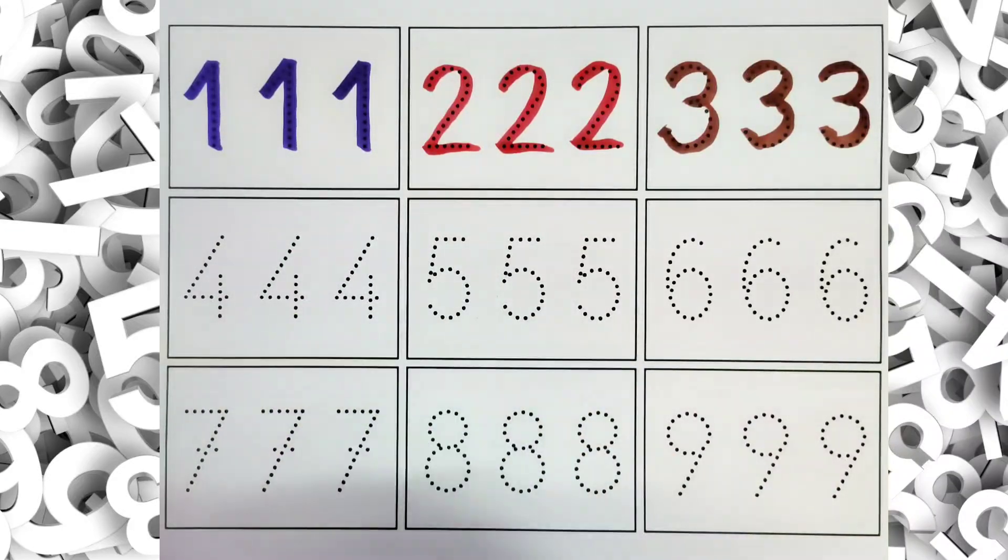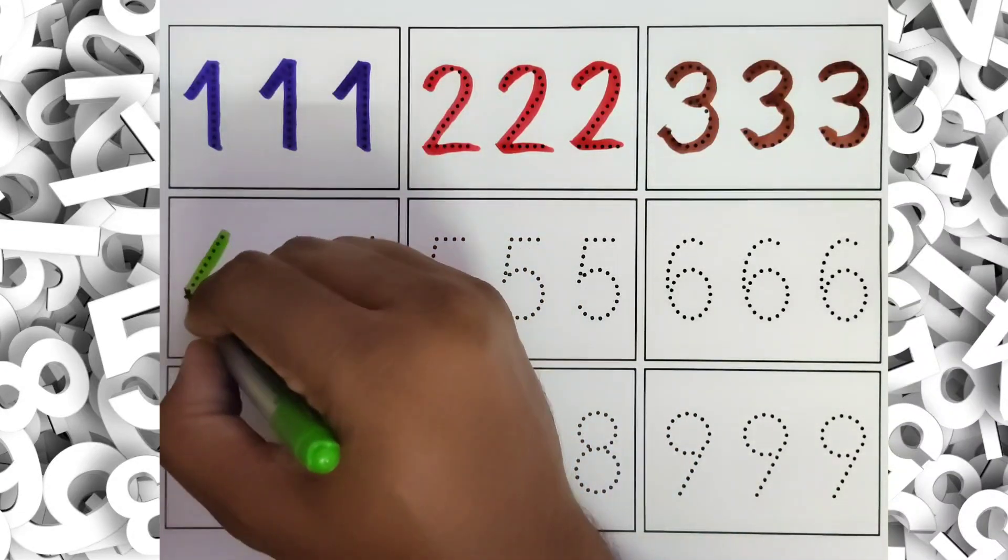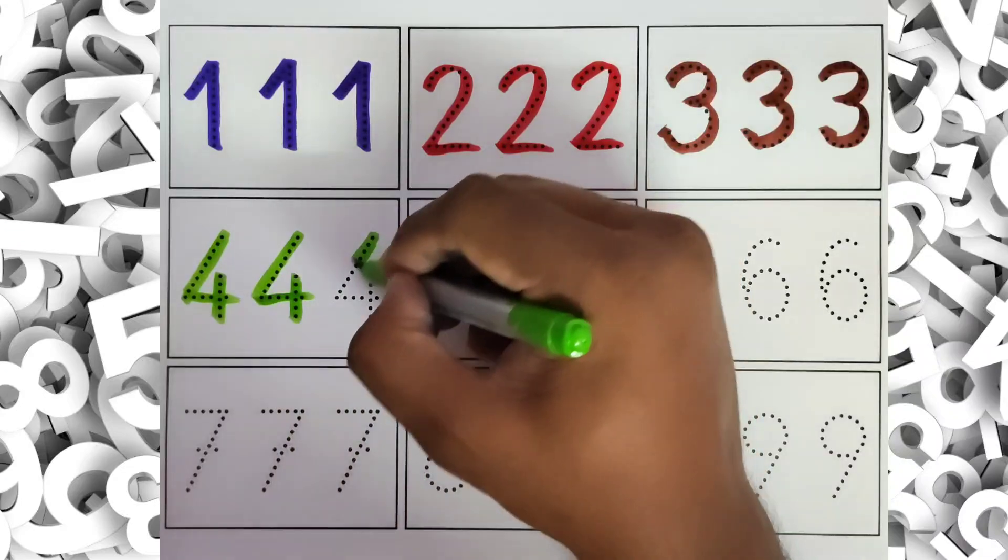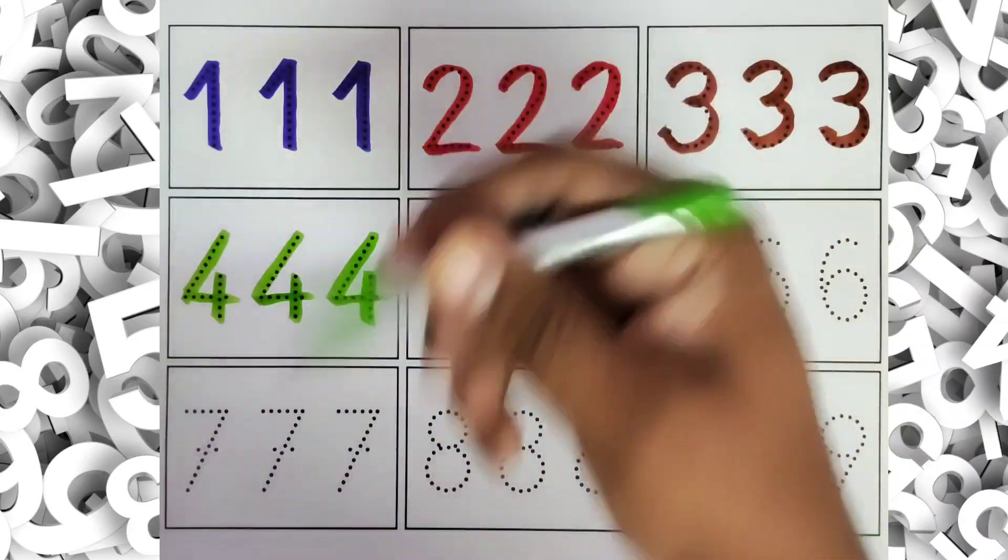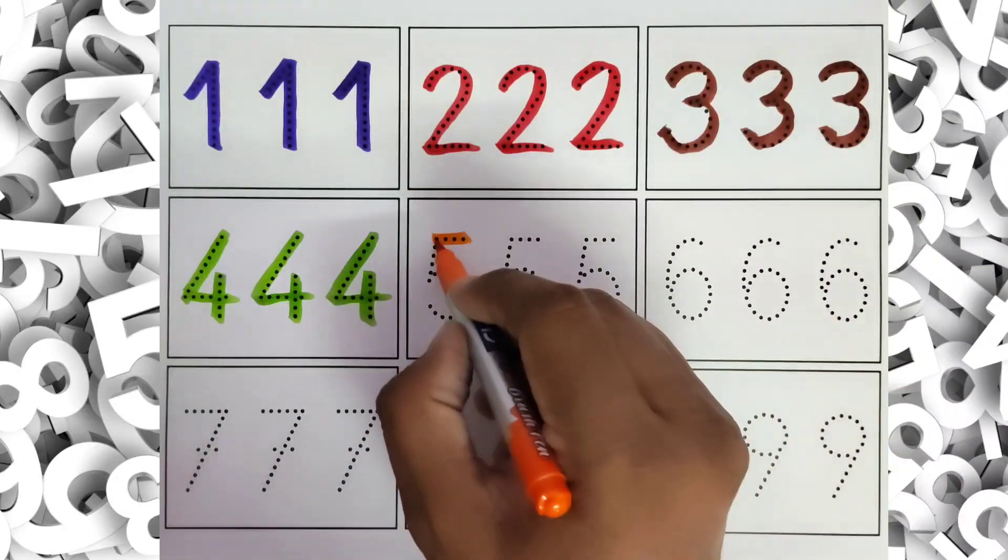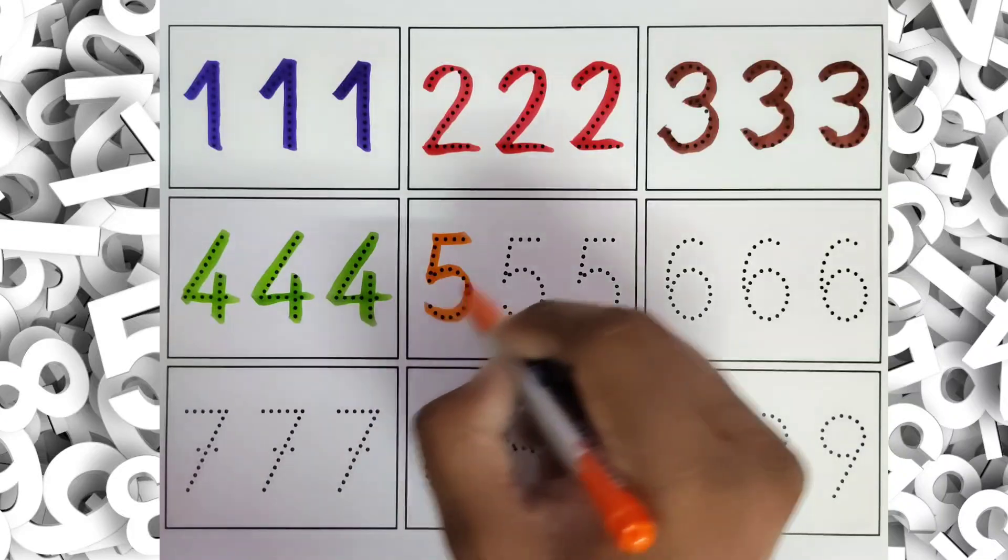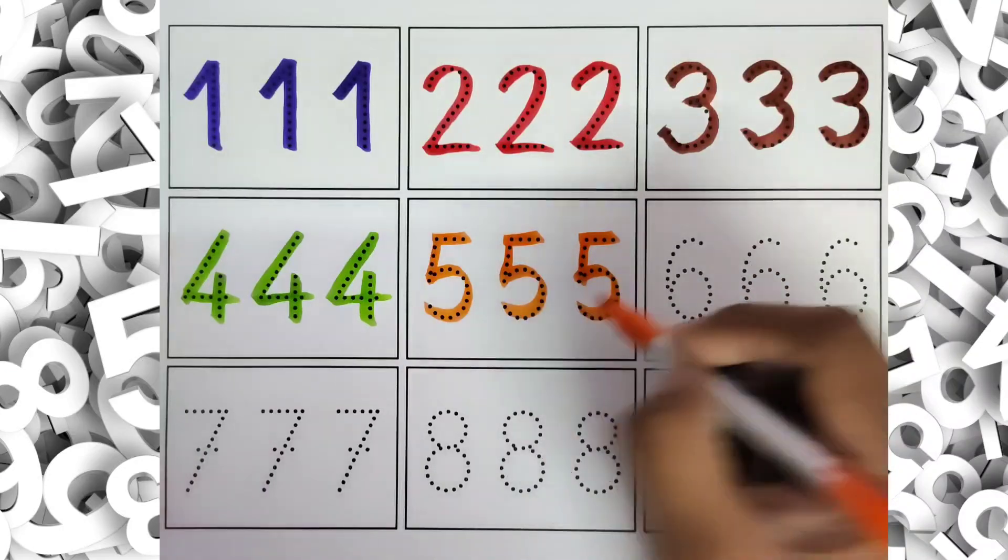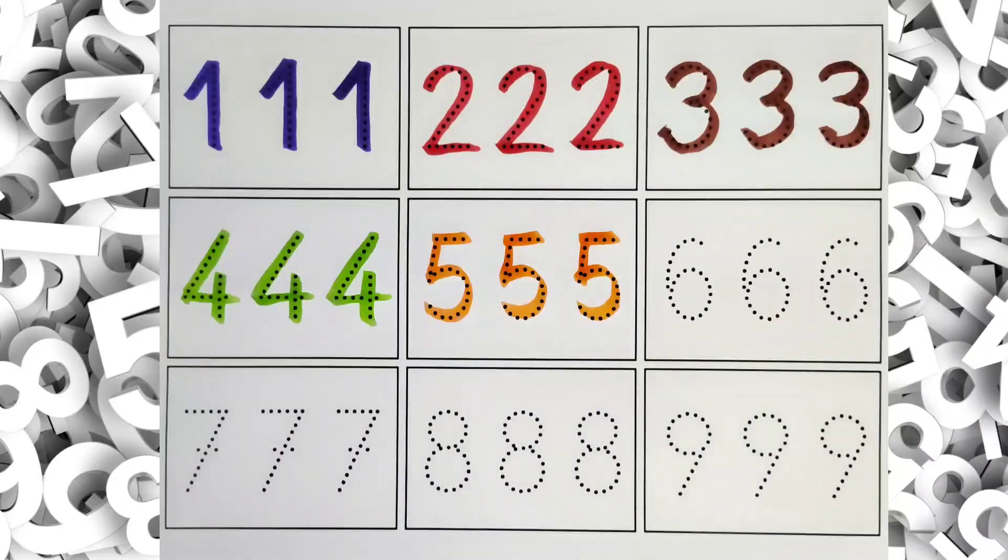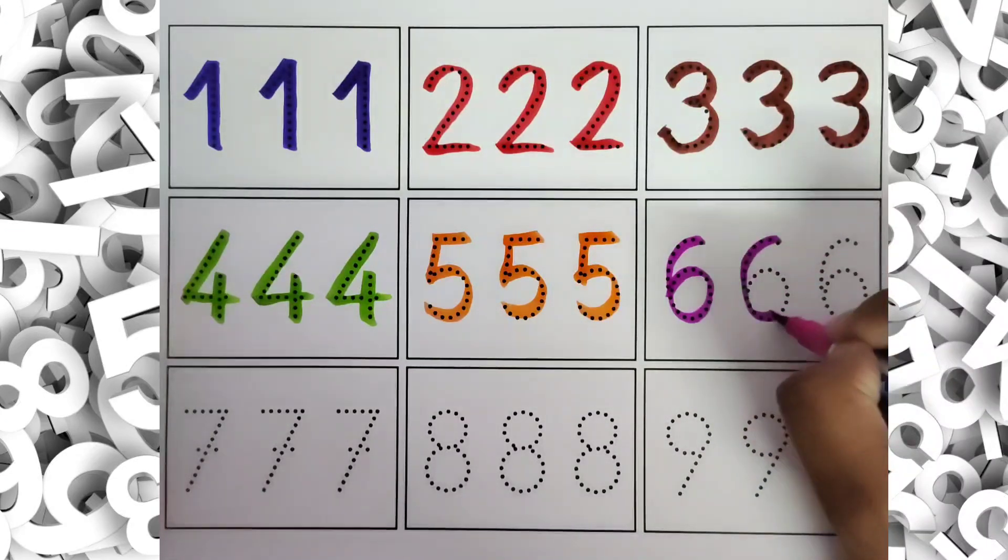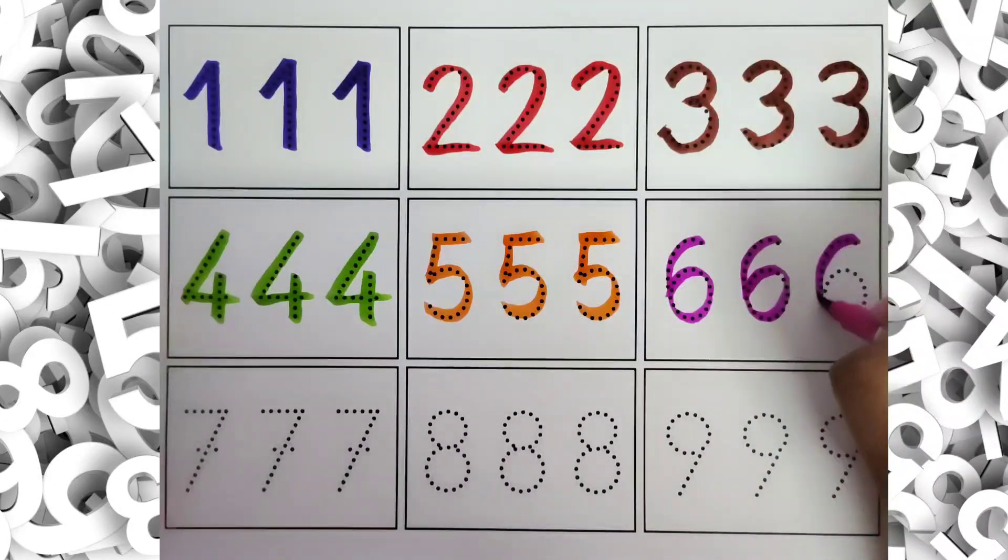This is 4. 4, 4, 4. This is 5. 5, 5, 5. This is 6. 6, 6, 6.